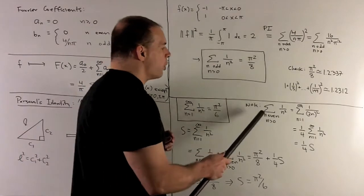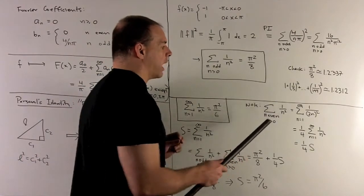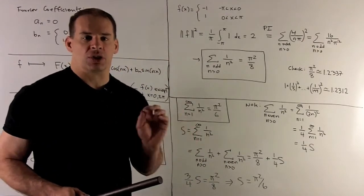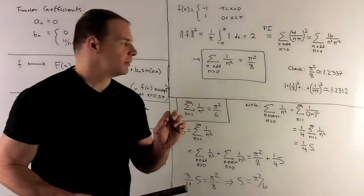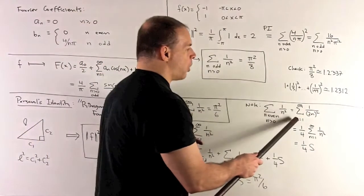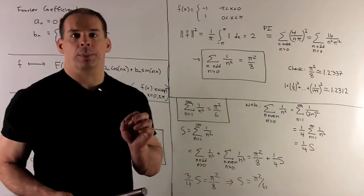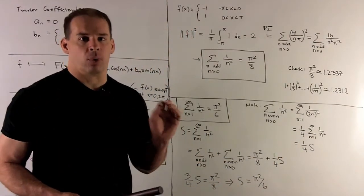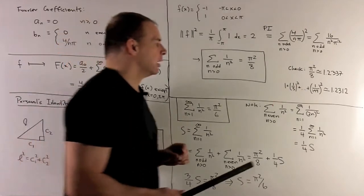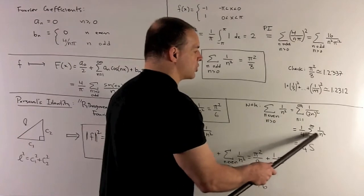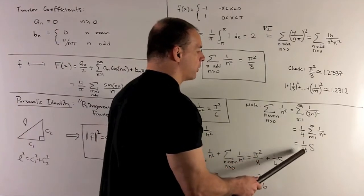If I take the sum over n even and positive of 1 over n squared. Well, if these numbers are even, they're just going to be equal to 2 times any integer that's positive. So, I can rewrite this as just 1 to infinity of 1 over 2 n squared. And we can factor out that 2. So, that's going to come out as a 1 fourth. That's a perfectly legal operation to pull a scalar out of a series. So, I have 1 fourth, then we have our sum over all positive integers, and that's just going to be 1 fourth times s.